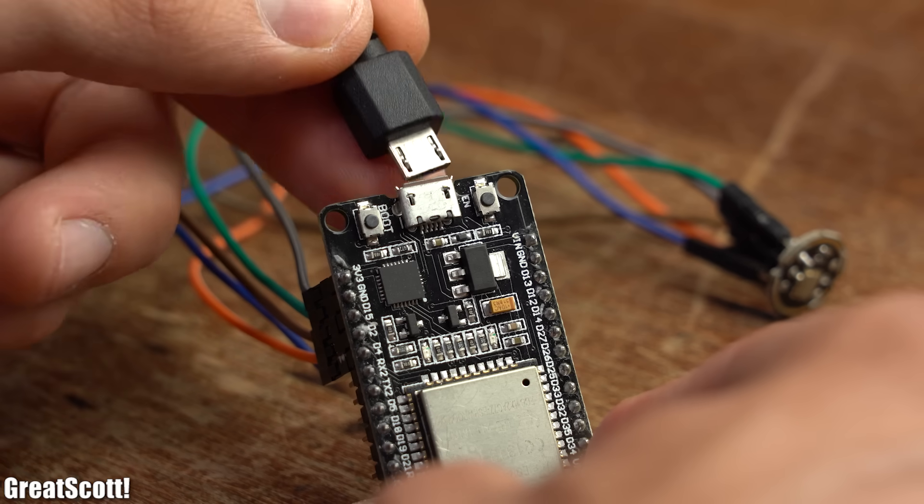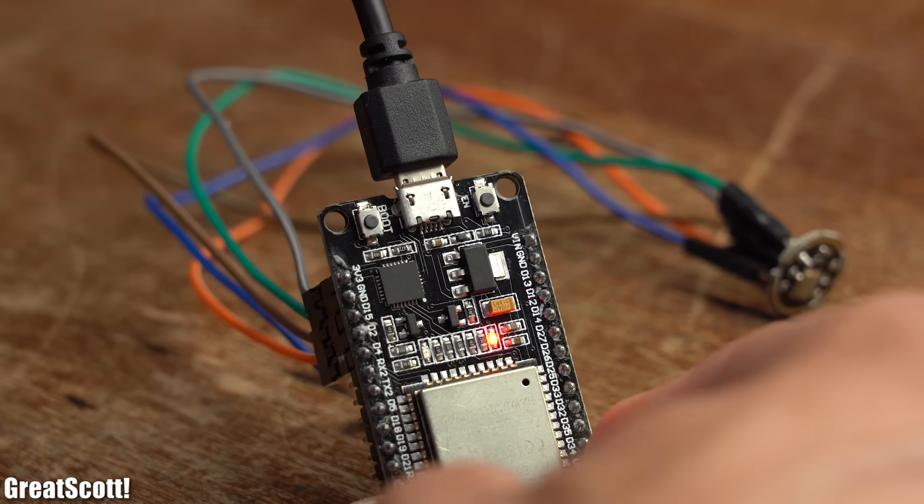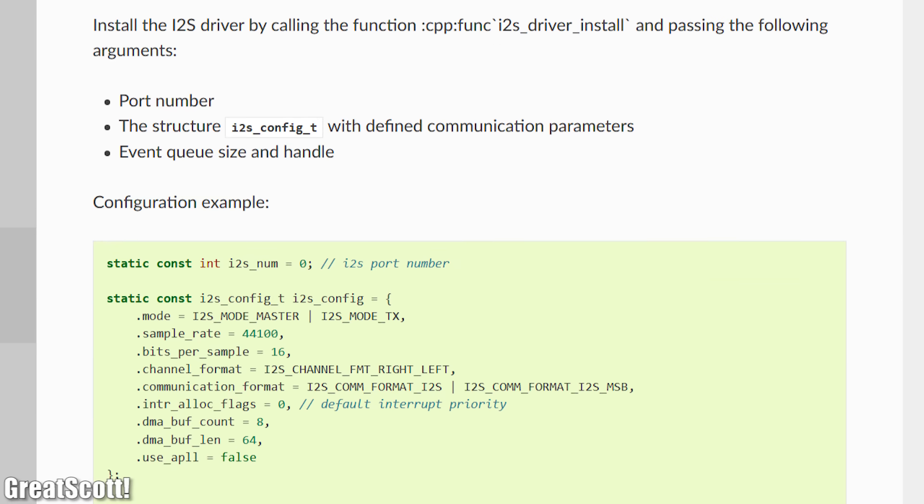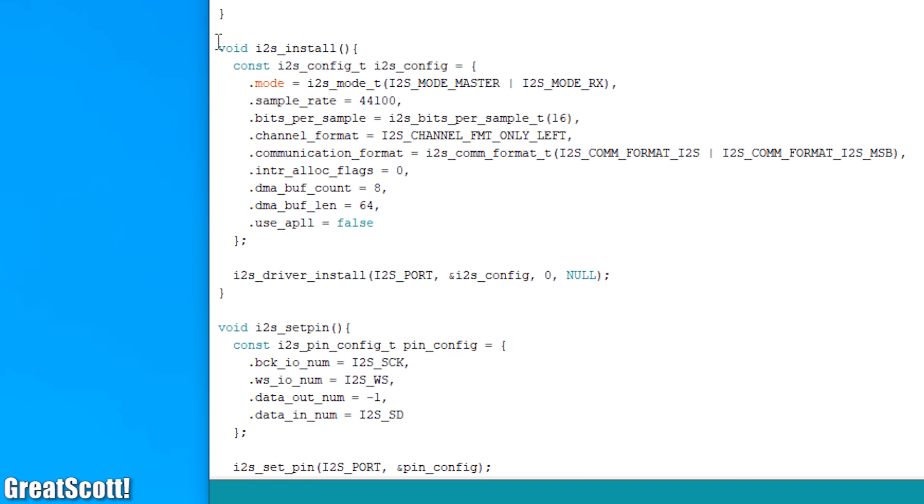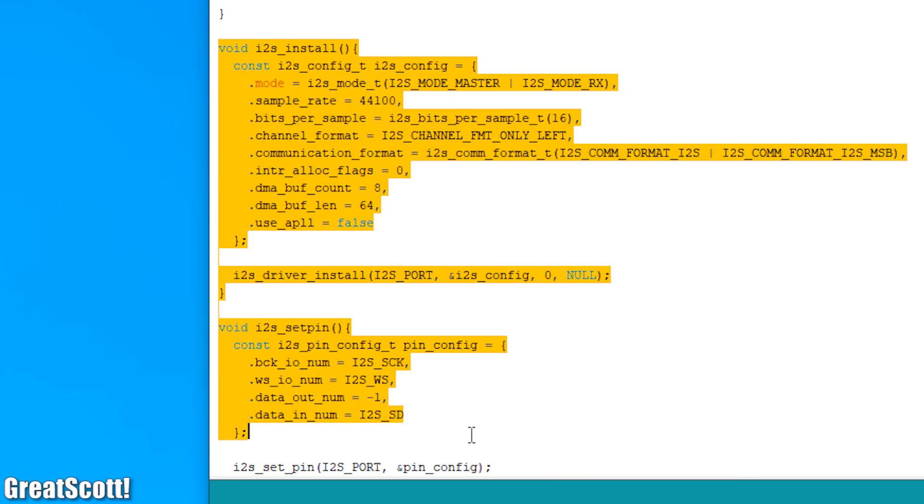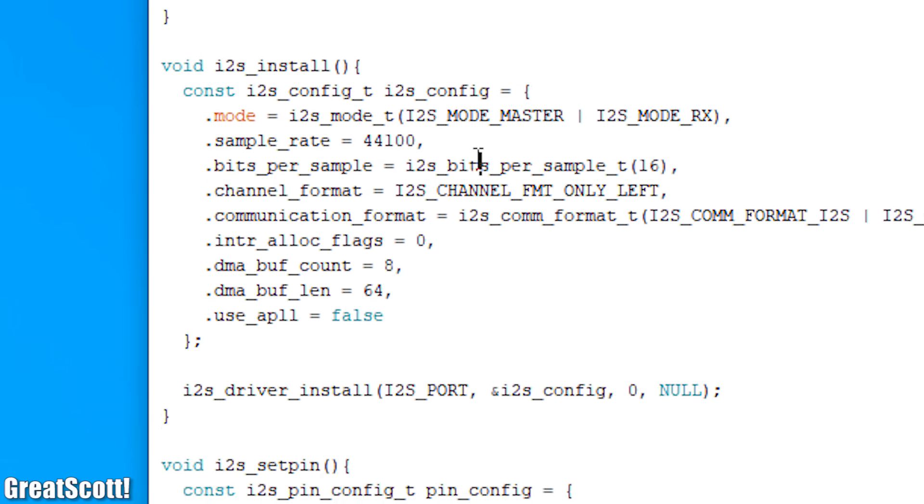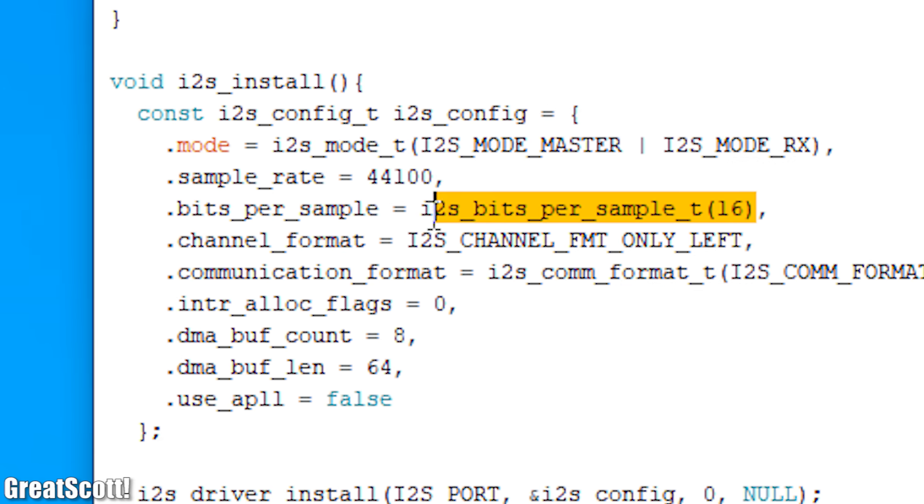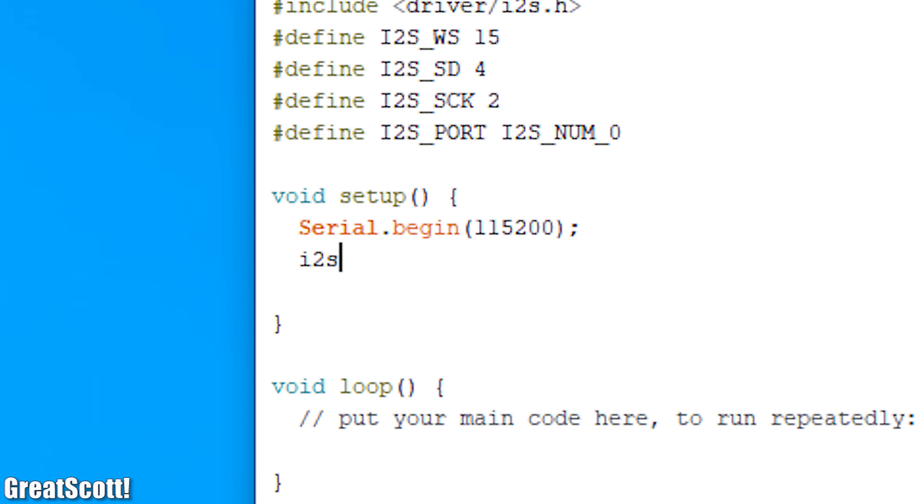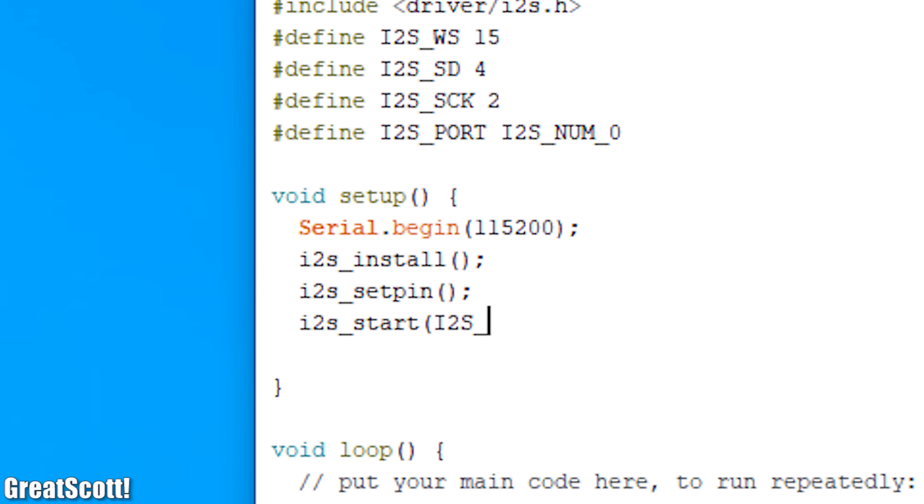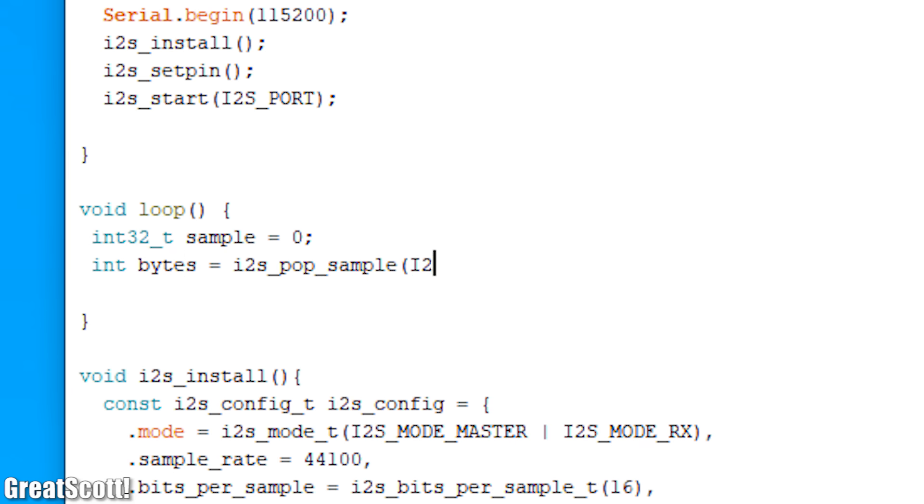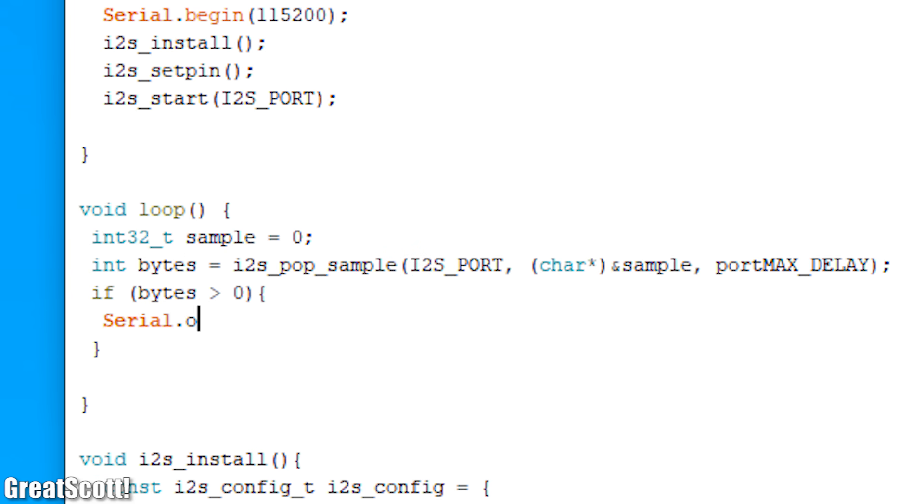And after connecting a micro USB cable I had a quick look at the I2S programming guide page for the ESP32. I simply copied a bit of the shown code in order to not only set the resolution to 16 bits and the sampling rate to 44.1kHz but also to initialize and start the I2S communication. All I had to add were a couple of lines to output the received data through the Serial Monitor.